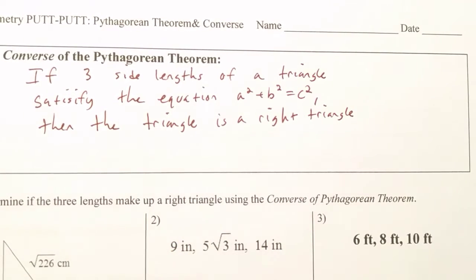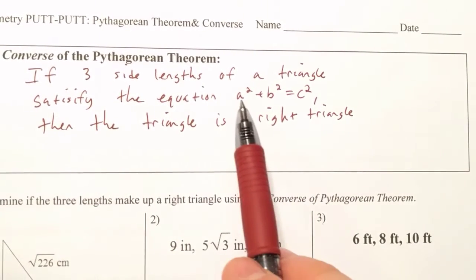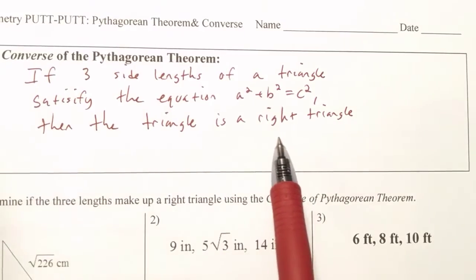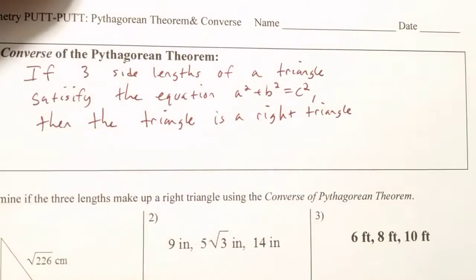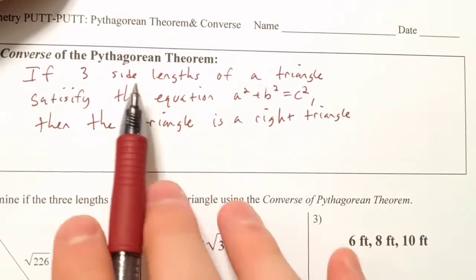This one's saying, if you have three side lengths in a triangle and it satisfies this equation, then we know it's a right triangle. So it's the exact opposite direction. We've changed the if-then statement.